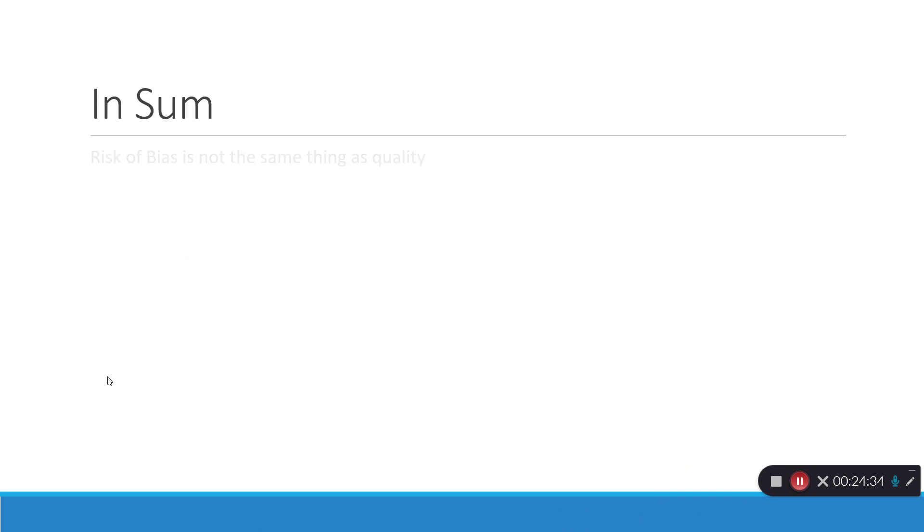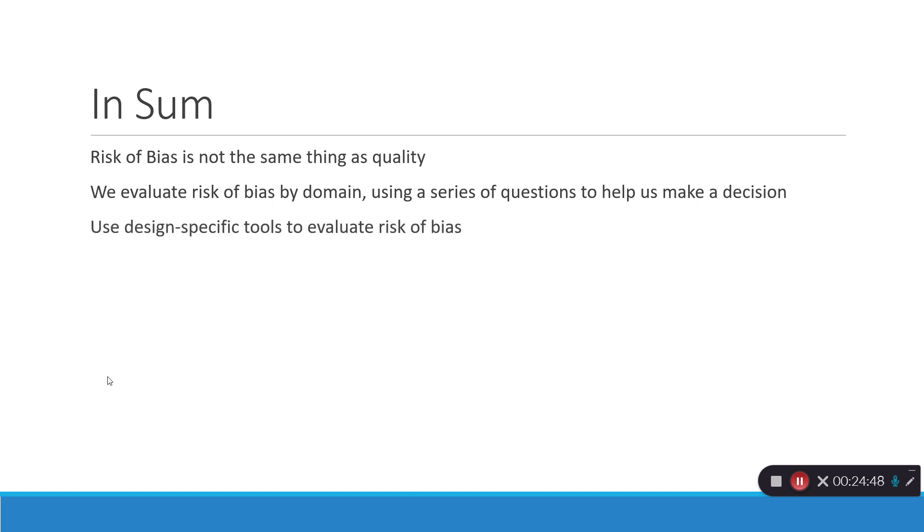So, to sum up, risk of bias is not the same thing as quality. We evaluate risk of bias by domain, using a series of questions to help us make a decision. And then we use design-specific tools to help us evaluate the risk of bias.